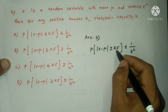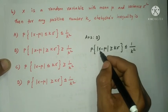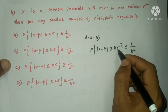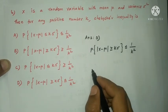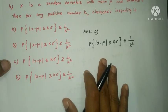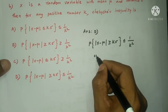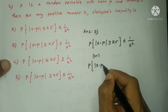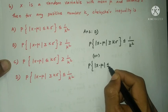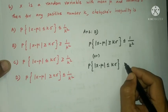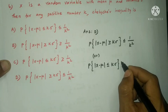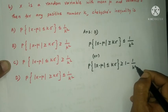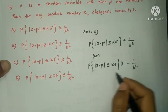k is any positive number, x is a random variable, mu is the mean, sigma is the standard deviation. This is Chebyshev's inequality. Also P of modulus x minus mu less than or equal to k sigma is greater than or equal to 1 minus 1 by k square.